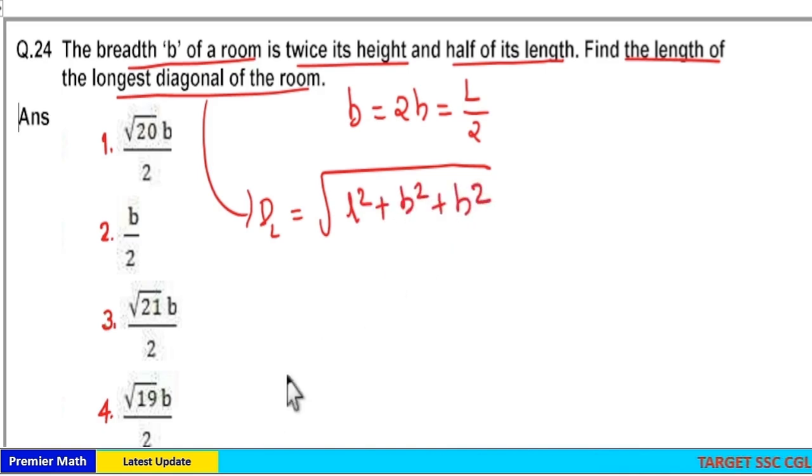Now this is equal to L square. L is equal to 2B, so L square is equal to 4B square.